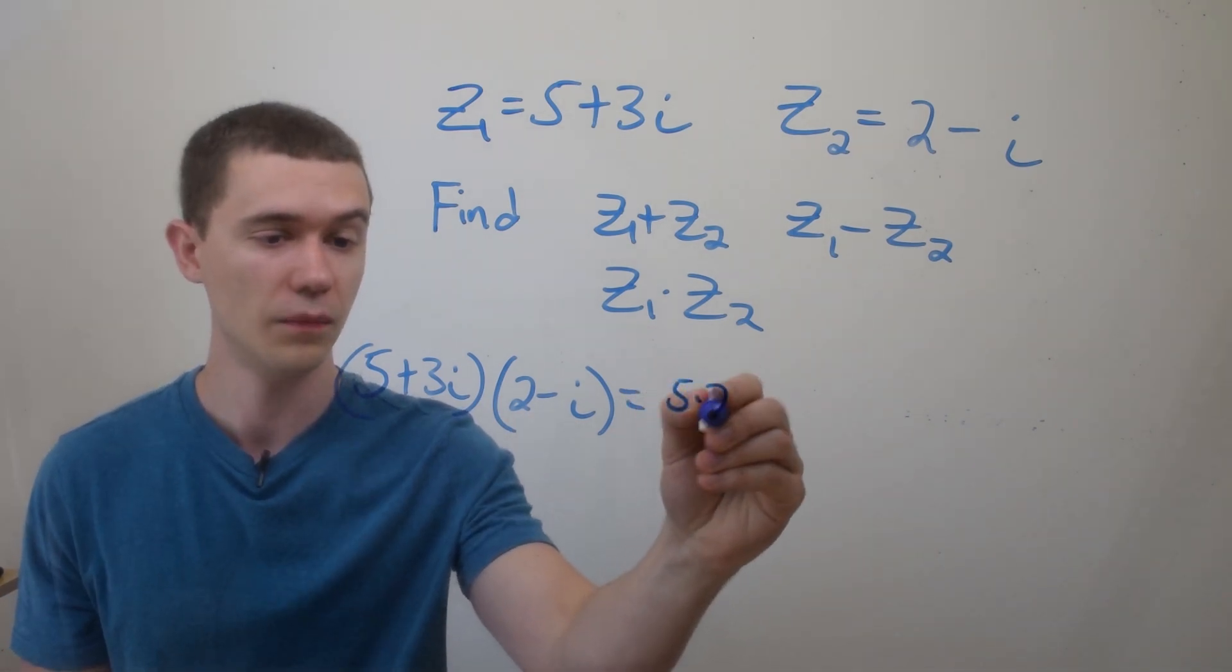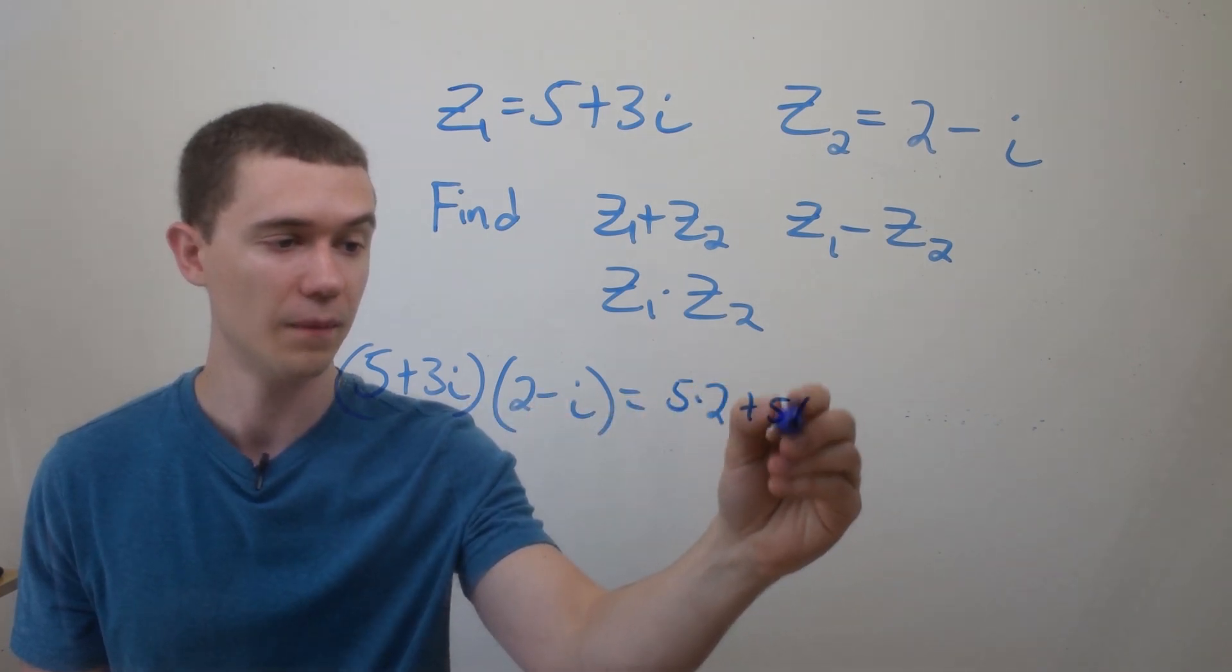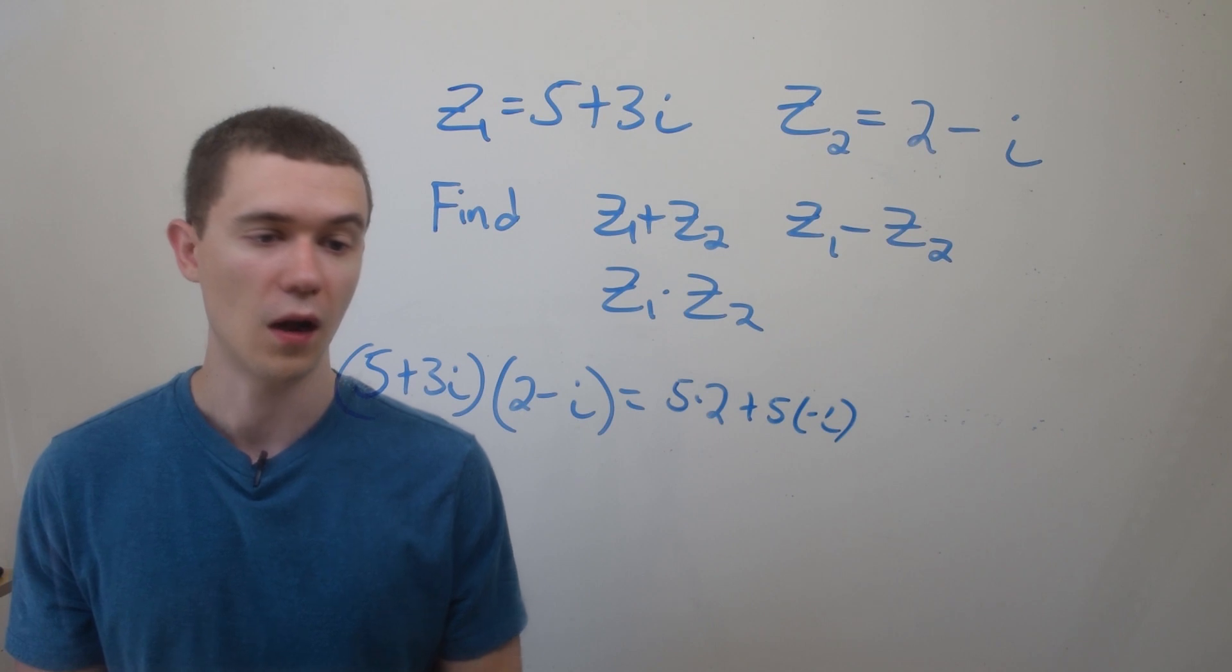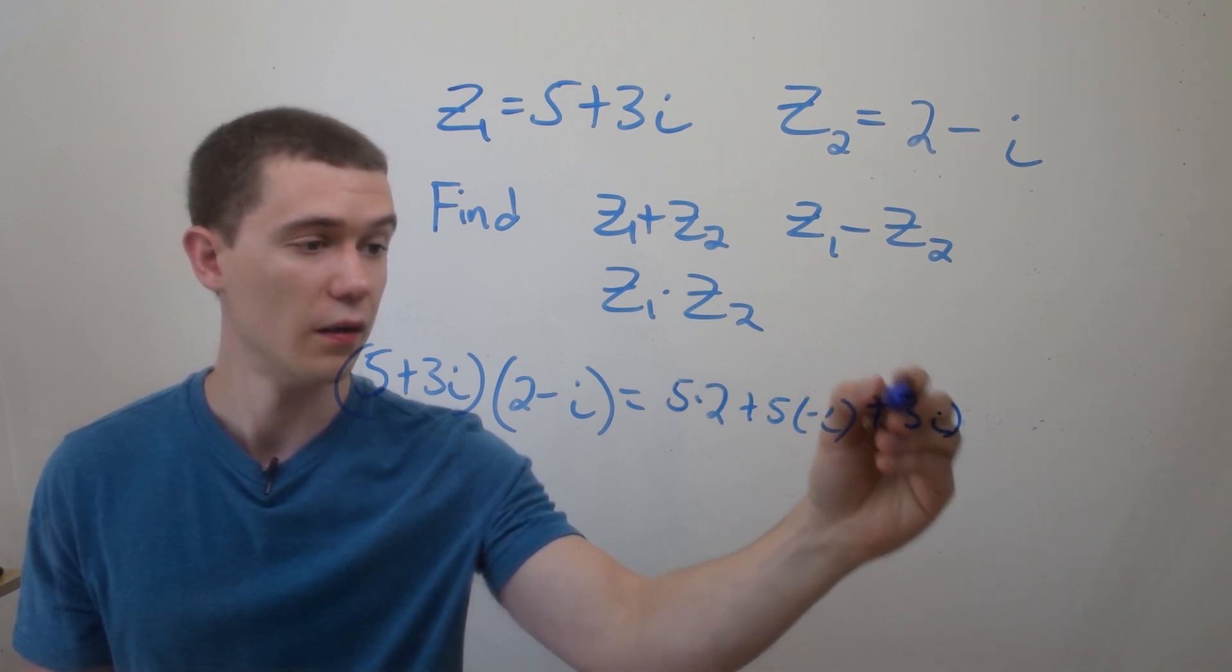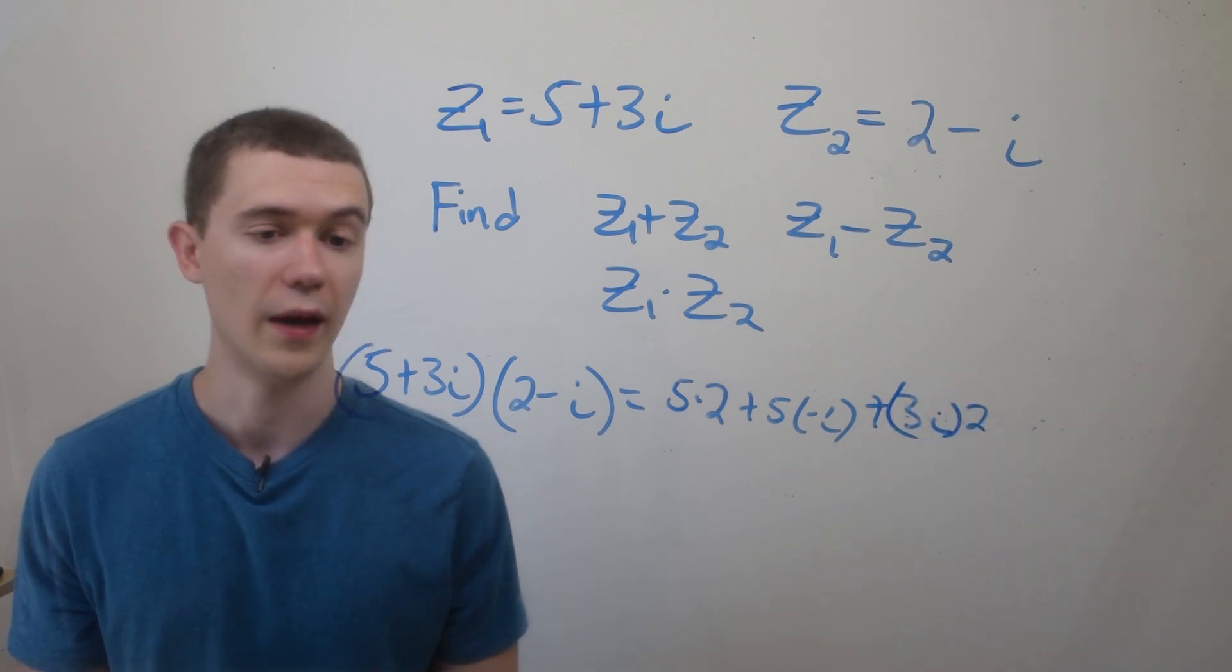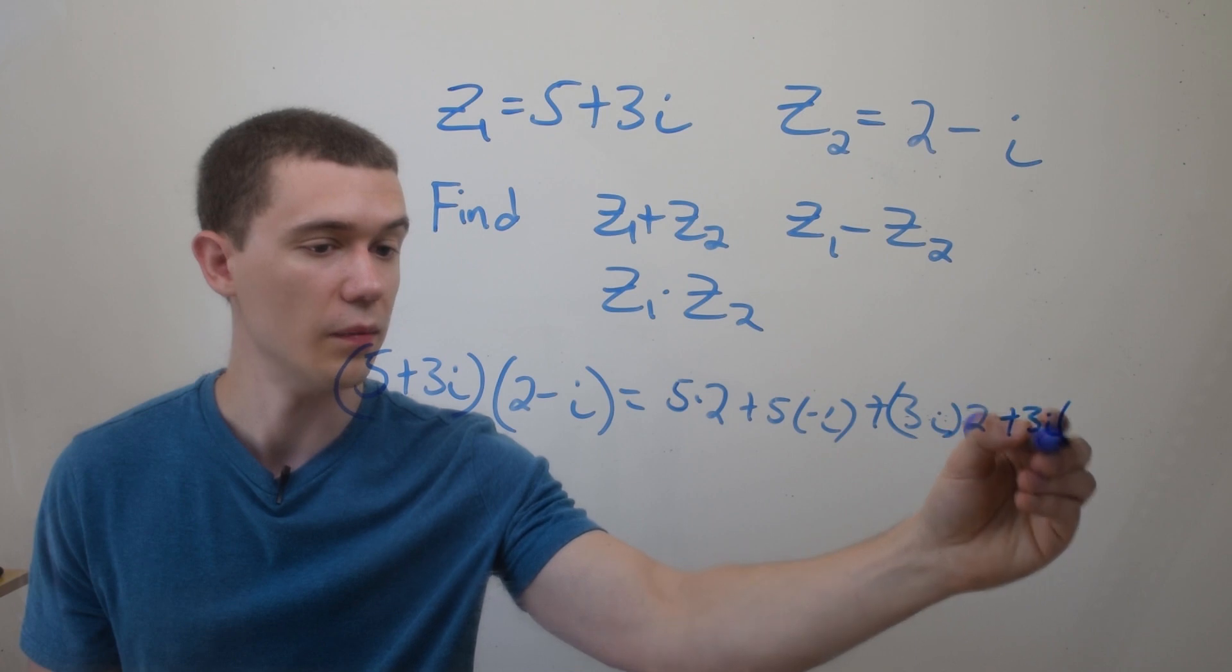So if I start distributing this, I'll have to do 5 times 2, I'll have to do 5 times minus i, I'll have to do 3i times 2, and I'll have to do 3i times minus i.